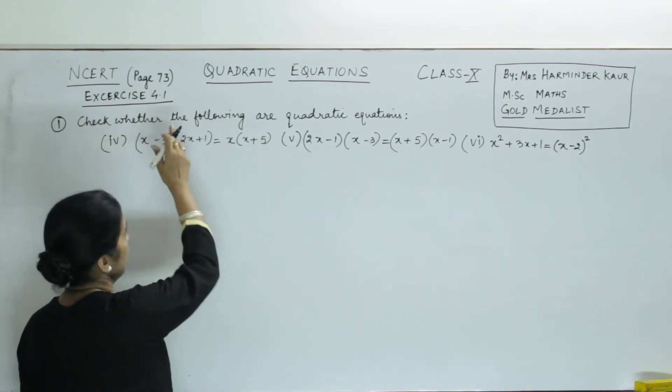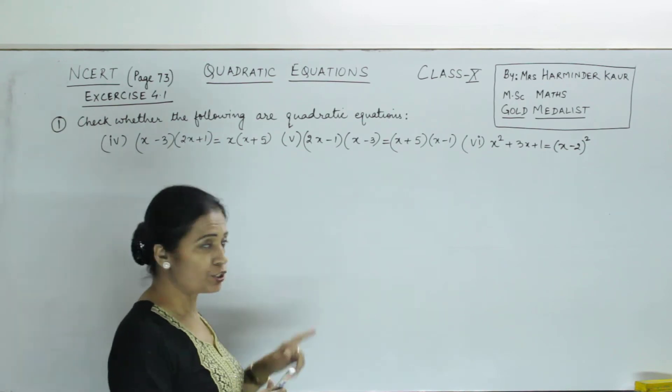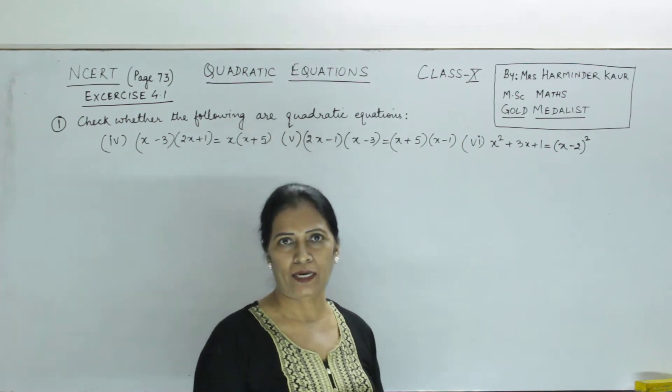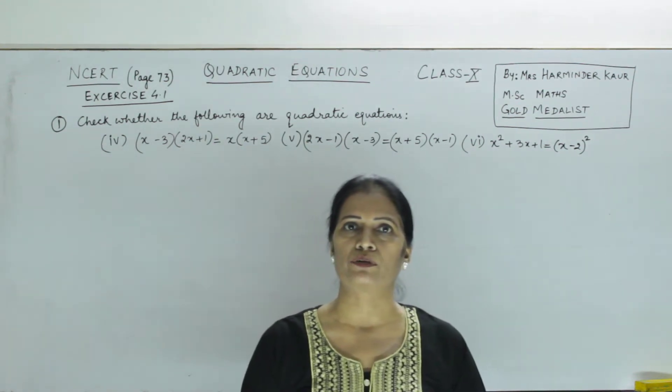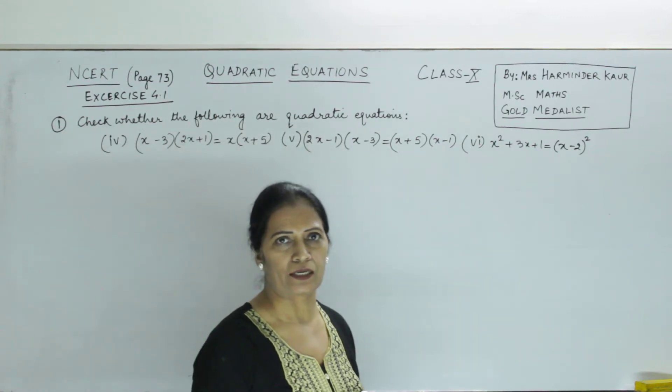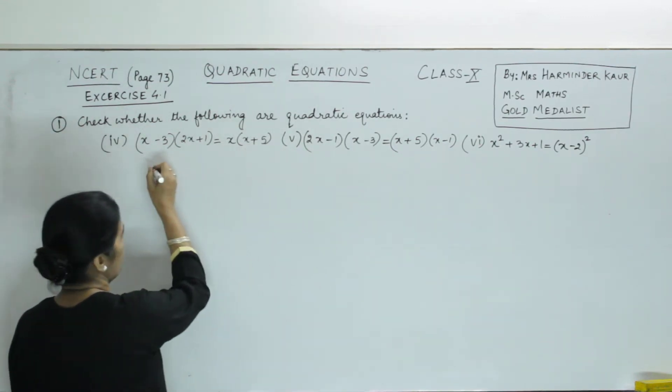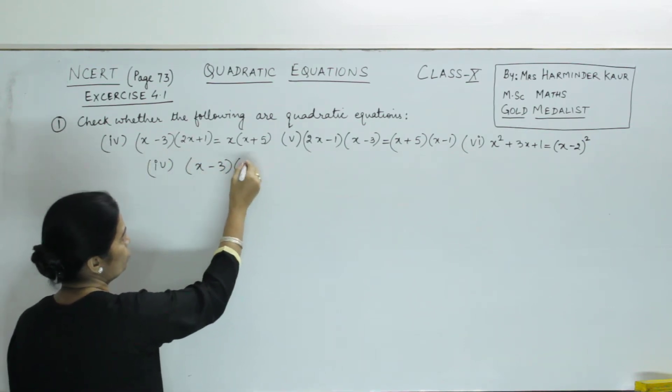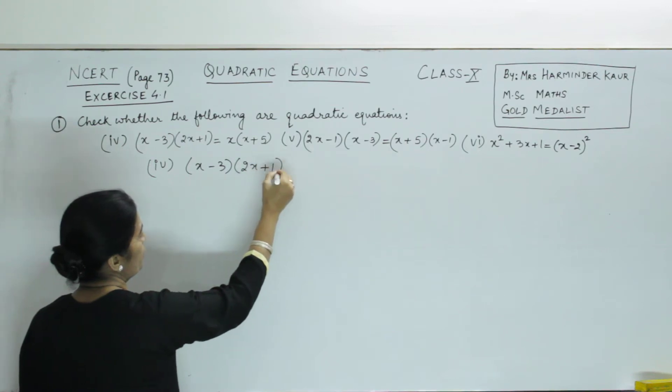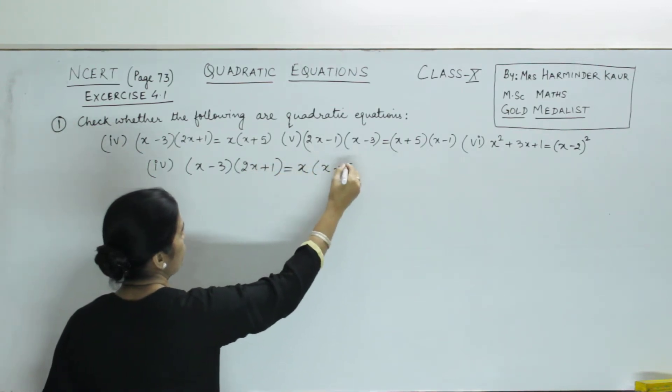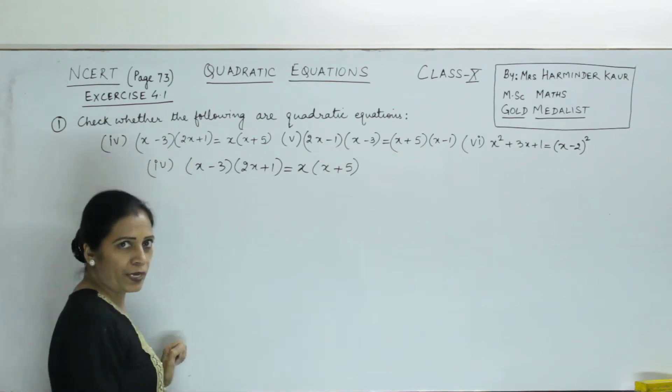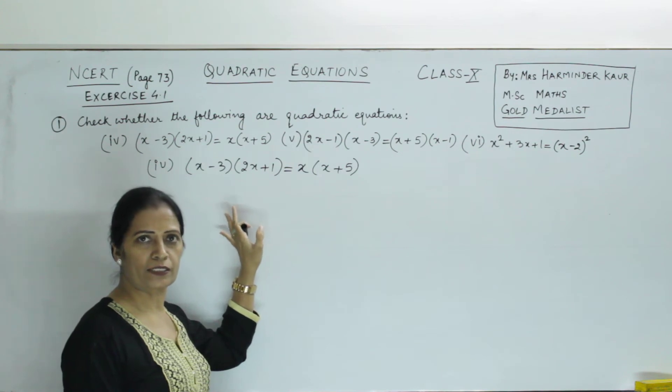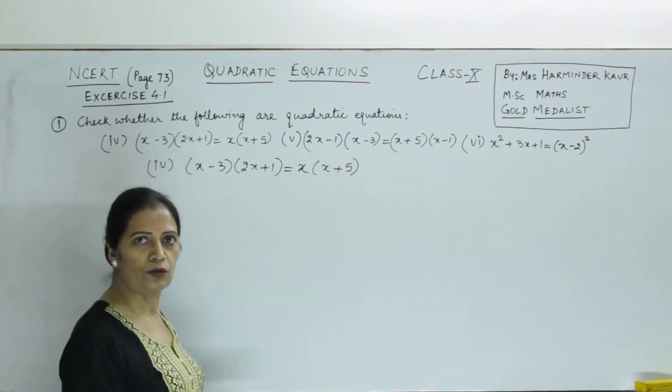So again, firstly what is the question? Check whether the following are quadratic equations. So let's check that the given equations are quadratic equations or not. Now for this, we start with the fourth part. So it is (x-3)(2x+1) = x(x+5).